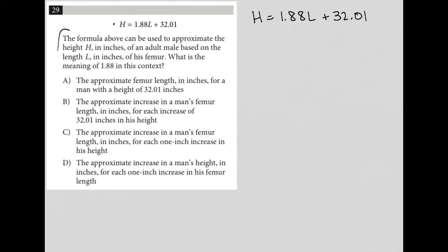The question goes on to say the formula above can be used to approximate the height H. So we know that H represents height in inches of an adult male based on the length L in inches of his femur. What is the meaning of the 1.88 in this context?